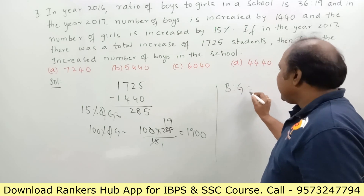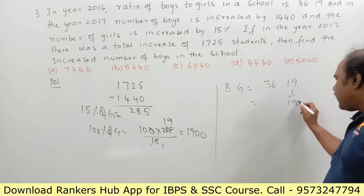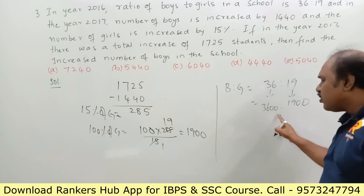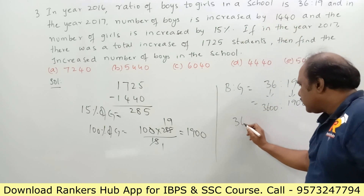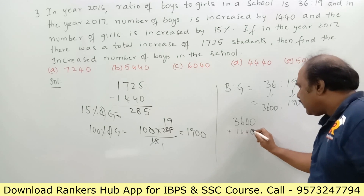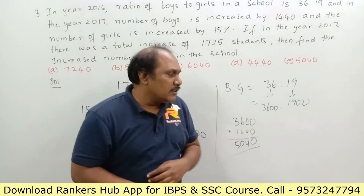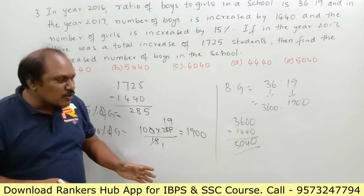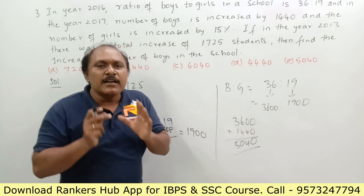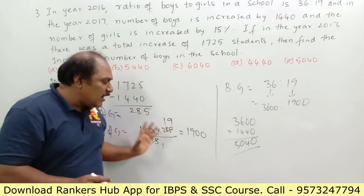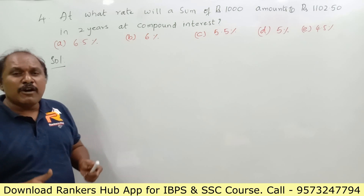The ratio of boys to girls in 2016 is 36 to 19. If girls are 1900, then boys should be 3600 — you can verify the ratio: 3600 to 1900. Boys increased by 1440, so 3600 plus 1440 equals 5040. The increased number of boys in the school — that is, the total number of boys present in 2017 — is 5040.